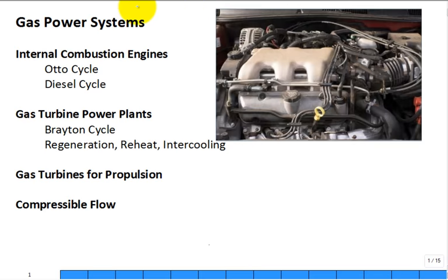We're in the chapter on gas power systems, covering internal combustion engines. I don't think I'll get to diesel engines or diesel cycles today, just gasoline Otto cycle. Then we'll get to Brayton cycles modeling stationary gas power plants and jet engines for aircraft propulsion, and then compressible flow.